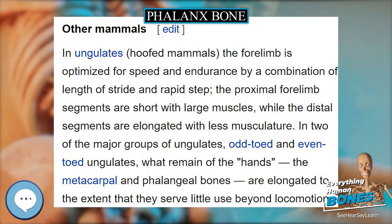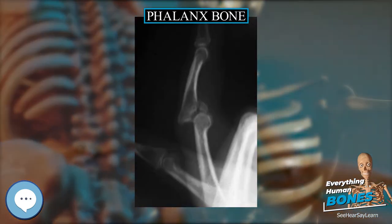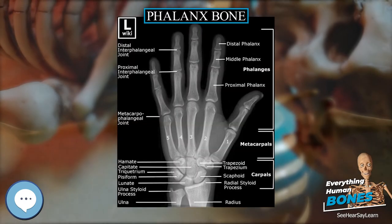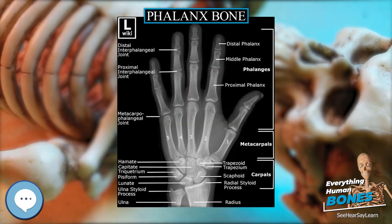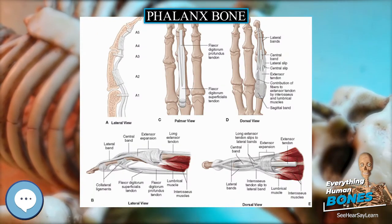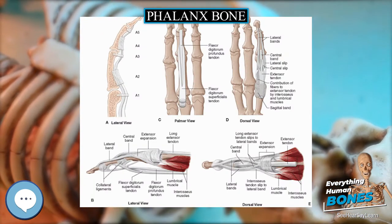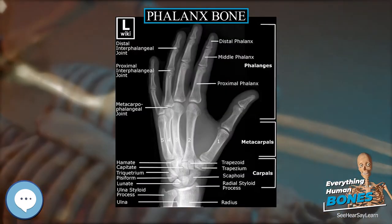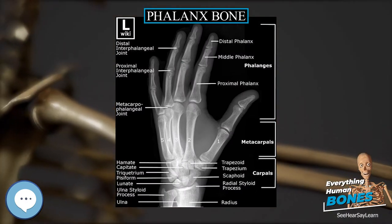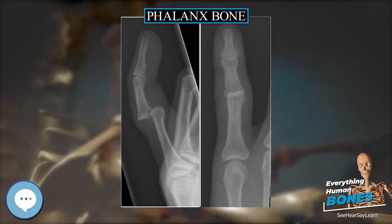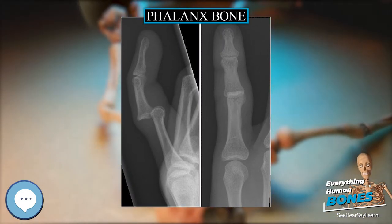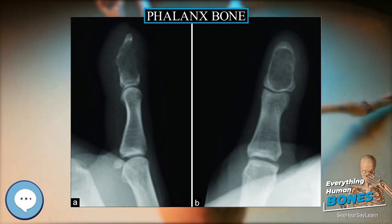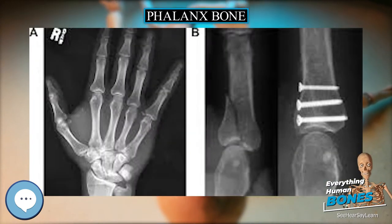Bone Anatomy. Each phalanx consists of a central part called the body and two extremities. In the foot, the proximal phalanges have a body that is compressed from side to side, convex above, and concave below. The base is concave, and the head presents a trochlear surface for articulation with the second phalanx. The middle phalanges are remarkably small and short, but rather broader than the proximal. The distal phalanges are smaller and flattened from above downward, each presenting a broad base for articulation and an expanded distal extremity for the support of the nail and end of the toe.